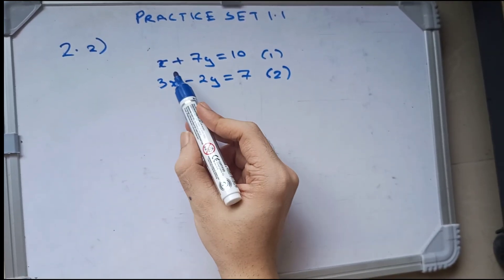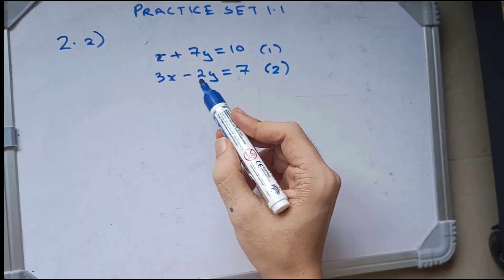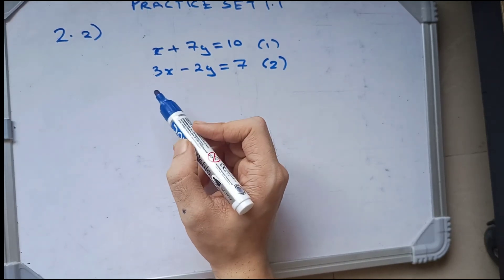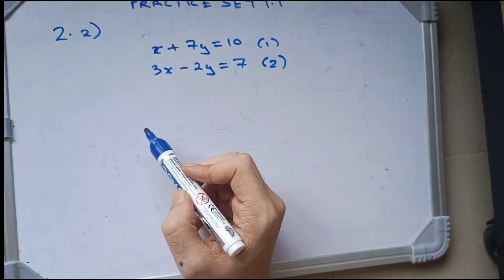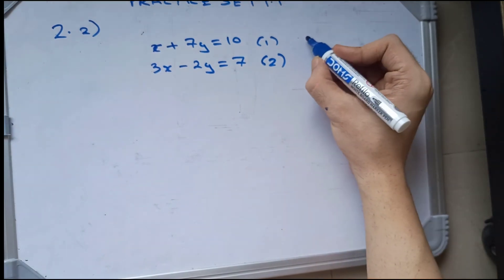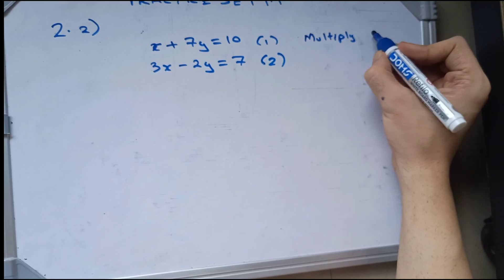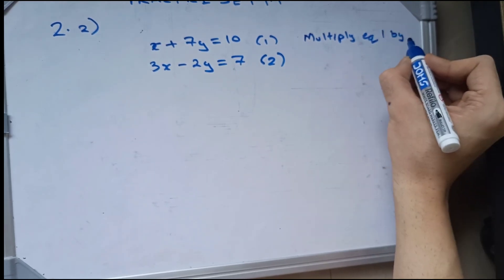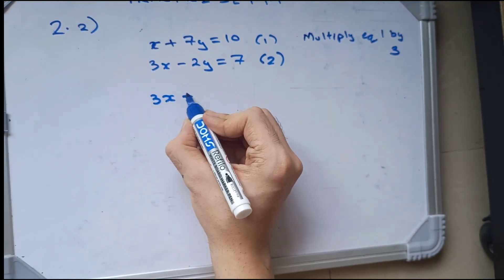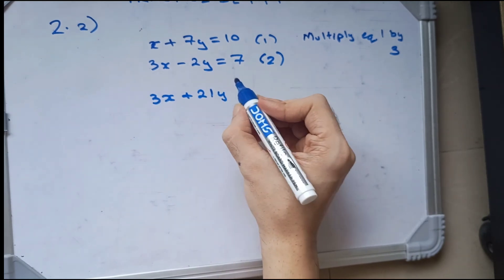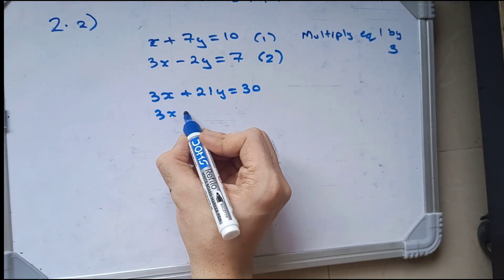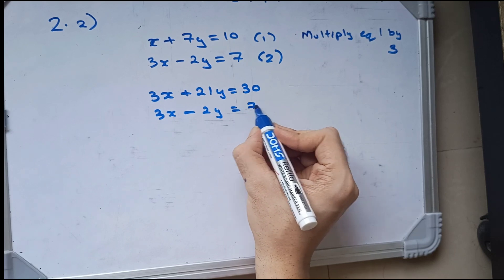Let's start with the next sum. x plus 7y is equal to 10, and 3x minus 2y is equal to 7. We know that x is easy to eliminate — we just have to multiply by 3. So, multiplying equation 1 by 3, we will get 3x plus 21y, which is equal to 30. And the second equation remains 3x minus 2y is equal to 7.